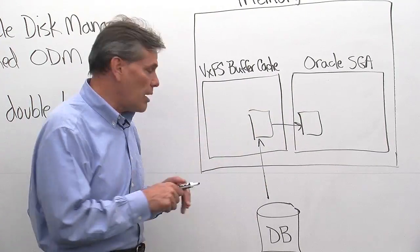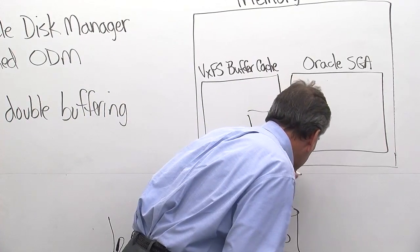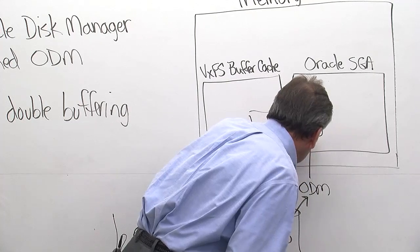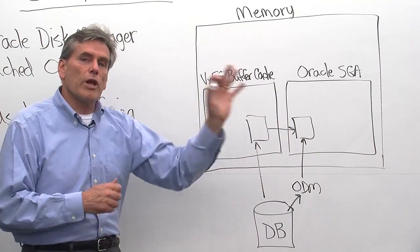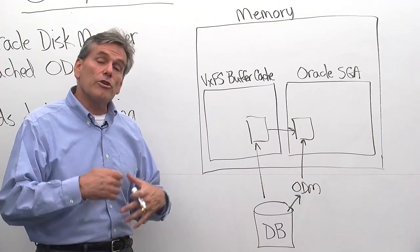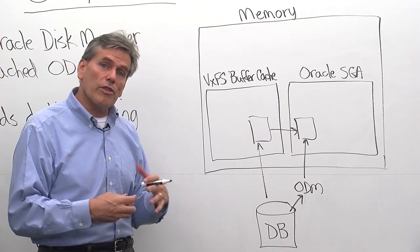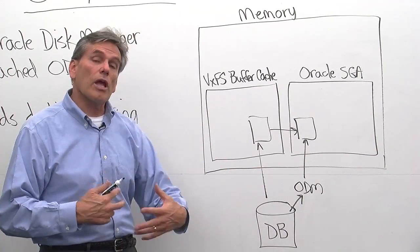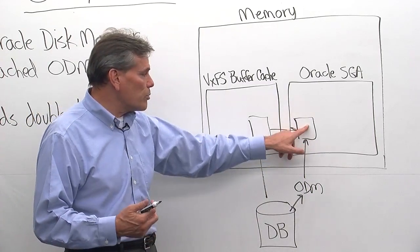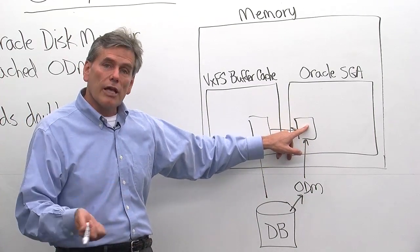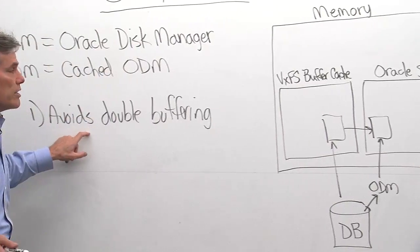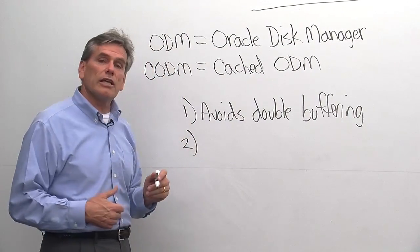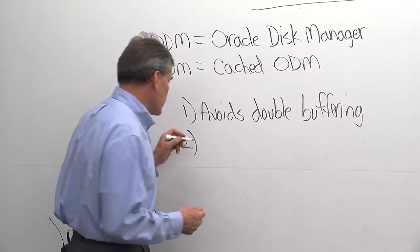With the idea of ODM, what happens is we put the I/O straight into Oracle's SGA. There's a library — our library — that basically all the Oracle requests come in and go through, and we know what to do with them and we put them straight into their SGA. So that avoids double buffering.